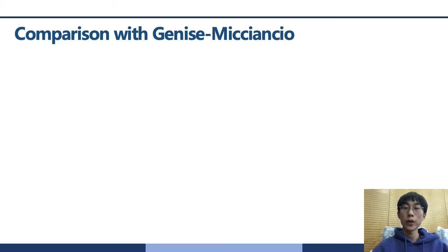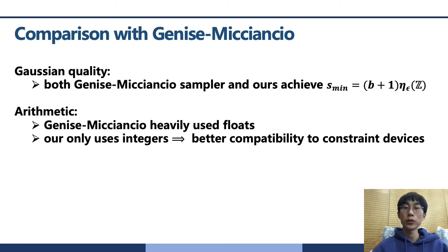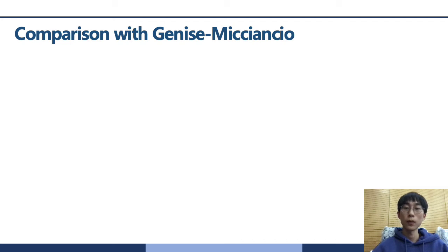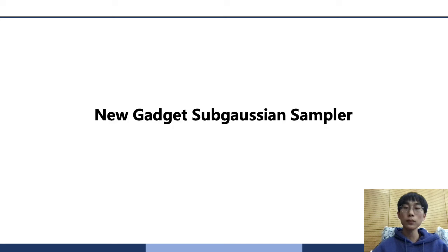So, as for comparison with Genise-Micciancio, our sampler achieves the same quality with the Genise-Micciancio one. And the Genise-Micciancio heavily uses floats. Ours only uses integers which has better compatibility to constrained devices. In addition, we have storage advantage. As for efficiency, both Genise-Micciancio sampler and ours runs in linear times. We implemented our new sampler and compared with the implementation of the Genise-Micciancio sampler in the palisade library. This figure shows that basically our algorithm is as fast as the Genise-Micciancio sampler implemented in palisade.